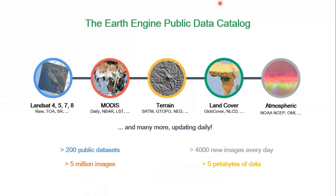Regarding the public data catalog, most of you have heard about Landsat 4, 5, 7, and 8. If you want to analyze on Landsat 8 and perform the same analysis on Landsat 5, traditionally you download them separately, convert raw data to top-of-atmosphere, then to surface reflectance. But Earth Engine provides all these datasets in one place — Landsat 4 to 8, in raw data, top-of-atmosphere, and surface reflectance formats. Not only Landsat, but MODIS multispectral data, MODIS products like soil moisture, MODIS NDVI, and land surface temperature are also available.